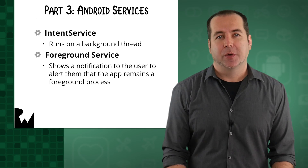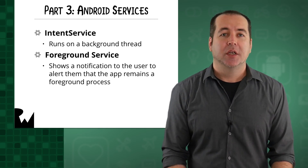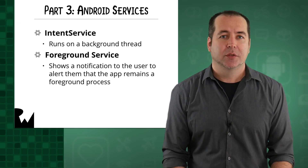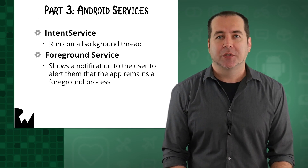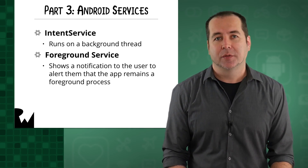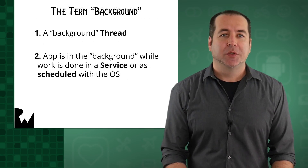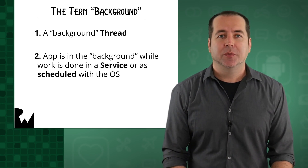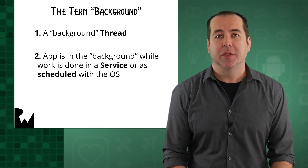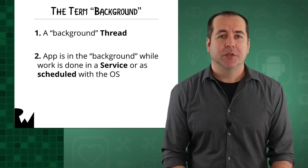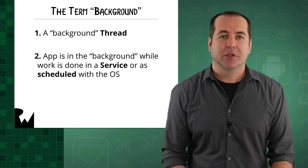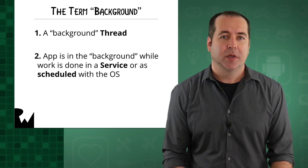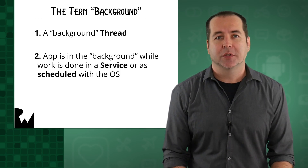In part three of the course, we'll look at the Android Service class, in which you run code that does not need a user interface. We'll look at services that are set up to run on background threads, and also services that you can use while your app is in the device background. In general, we'll use the term background in two distinct ways in the course, referring to non-UI threads as background threads, and also for computation your app does while your app itself is in the background. These uses of background are distinct, and we'll rely on the surrounding discussion and context to distinguish between them, especially in part three of the course on services.